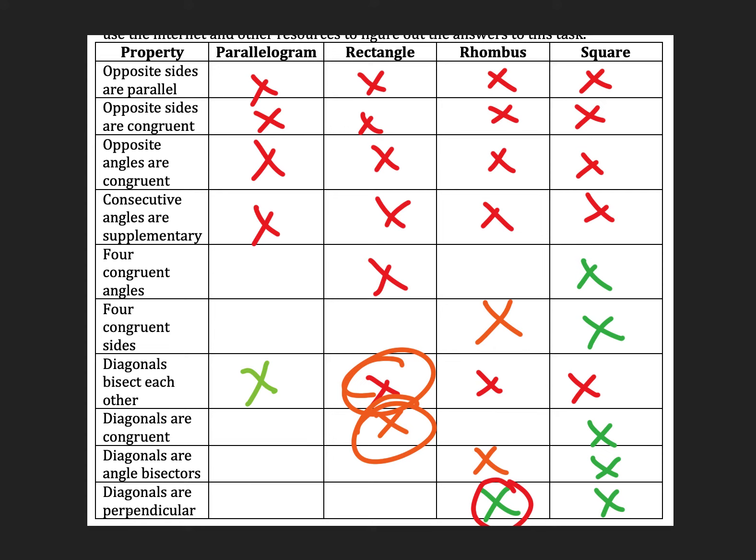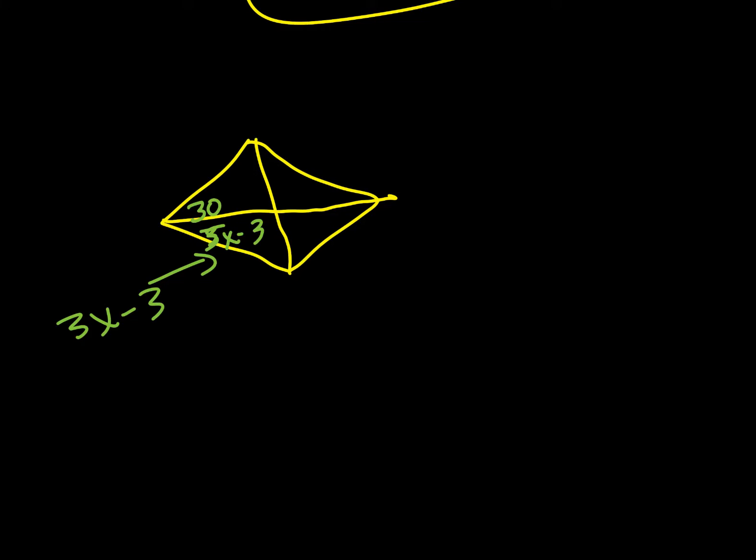Now, let's try another one. So this is a rhombus. And this time we're given, so it's 30. And 5x, or 3x minus 3. Okay, since it's a rhombus, it has the property that it bisects, diagonals, or angle bisectors, so this thing. And so these two angles will be congruent.